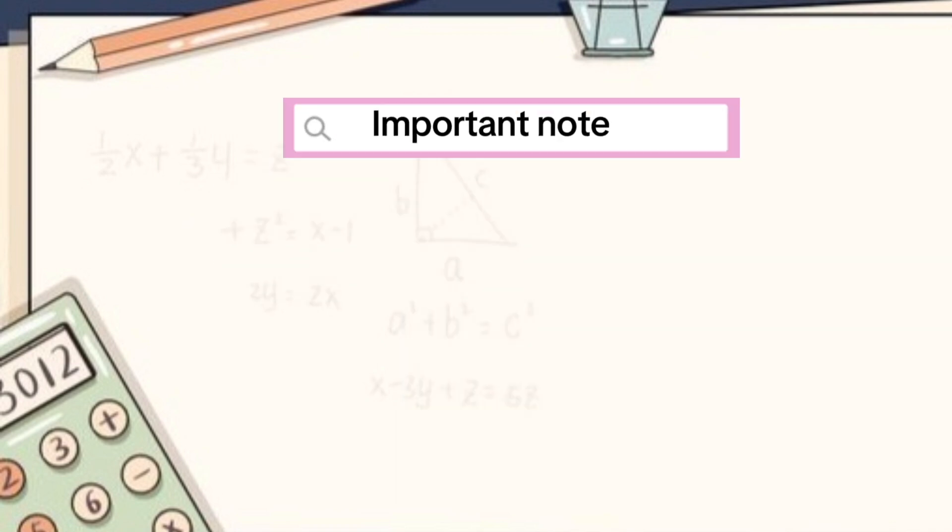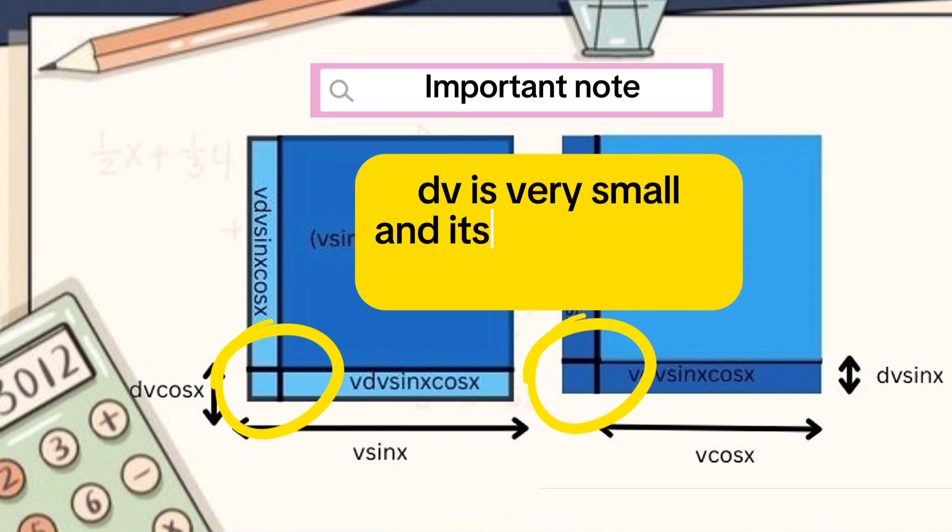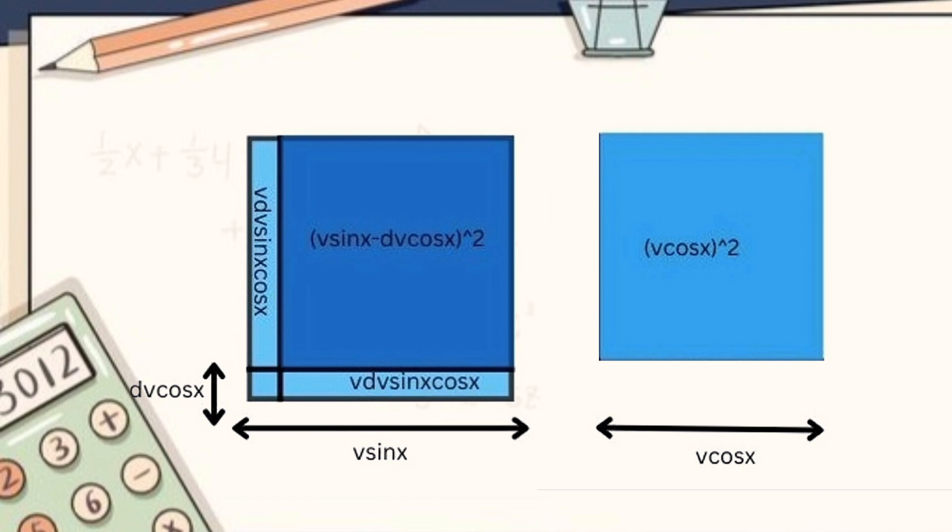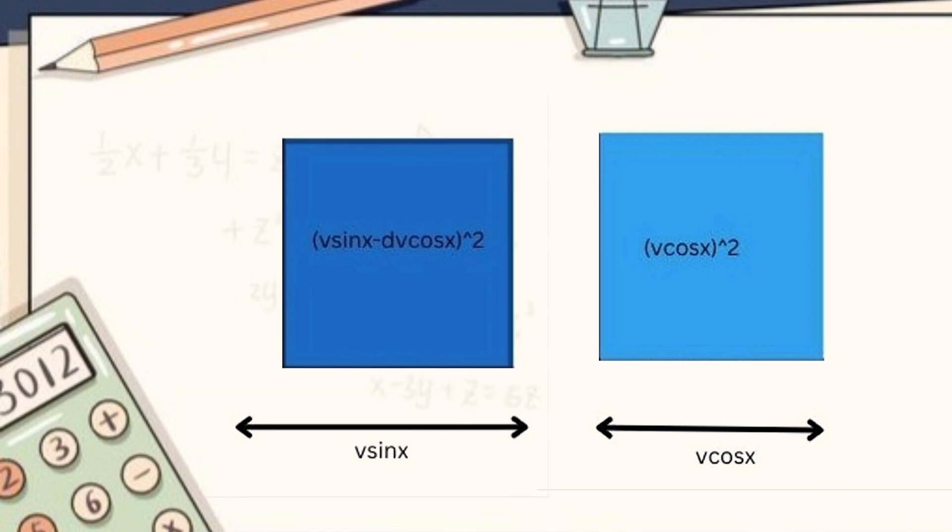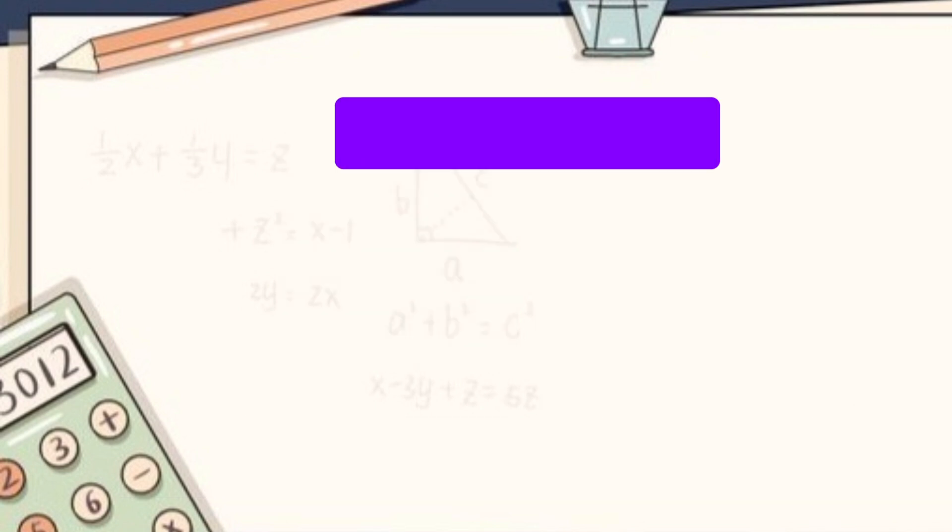Important thing to note here is that the smaller squares at the corners are ignored as delta v is very small and its square term will be negligible. We can clearly observe that the area decreased from the v sin x square is equal to the area added to the v cos x square.